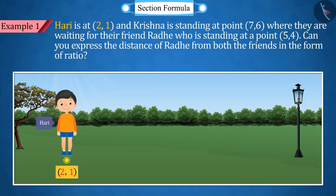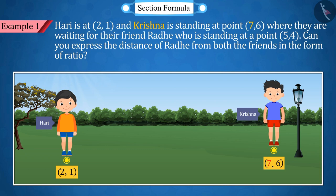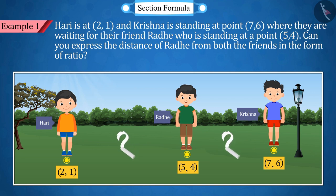Hari is at point (2, 1) and Krishna is standing at point (7, 6) where they are waiting for their friend Radhe, but Radhe is standing at point (5, 4). Can you express the distance of Radhe from both the friends in the form of ratio?